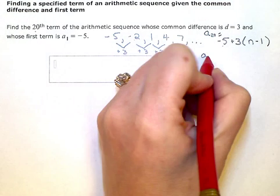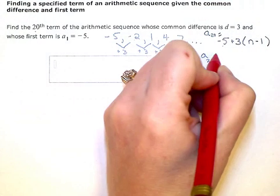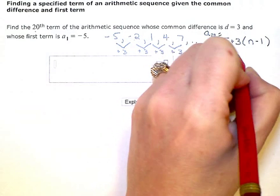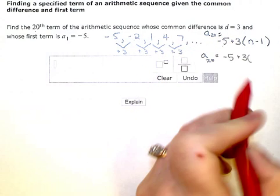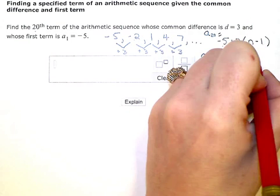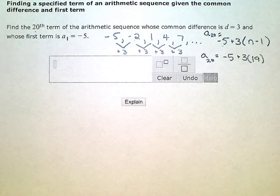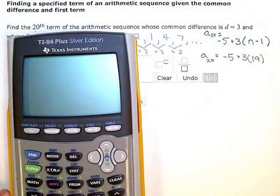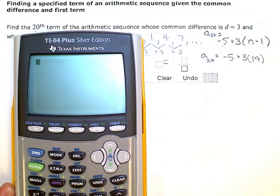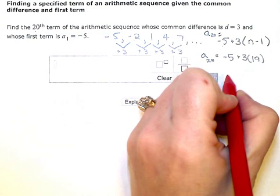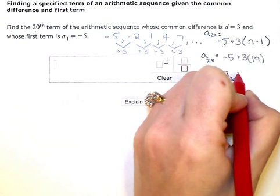I'll get the 20th term by doing negative 5 plus 3 times 19. Then I just figure out what negative 5 plus 3 times 19 is — that gives me my 20th term. So putting it in the calculator: negative 5 plus 3 times 19 gives me 52. So my 20th term, or a sub 20, is 52.